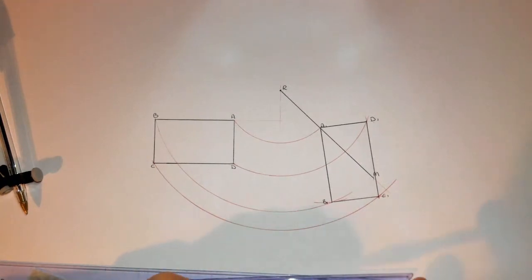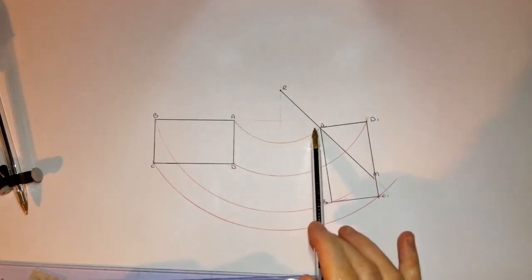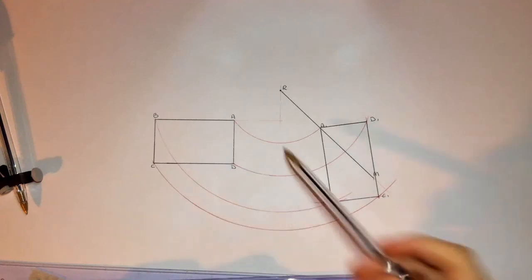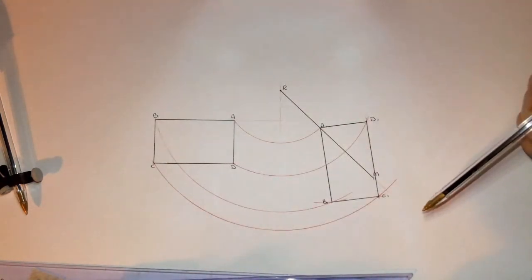So what we did there was we rotated the object here, A, B, C, D, about the point R until the vertex A hits the line RM. And then we used the geometry of the rest of the object to locate the rest of the points once we had them rotated about.